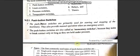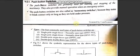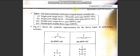Push buttons have four types: Single Pole Single Throw (SPST) — normally open; Single Pole Single Throw — normally closed; Double Pole Single Throw (DPST); and Double Pole Double Throw (DPDT).